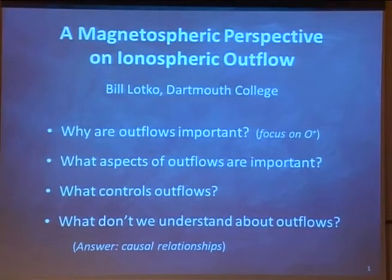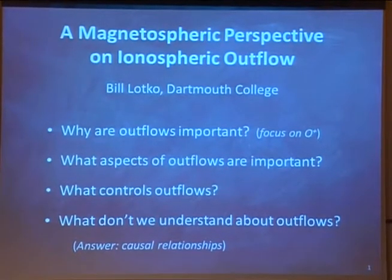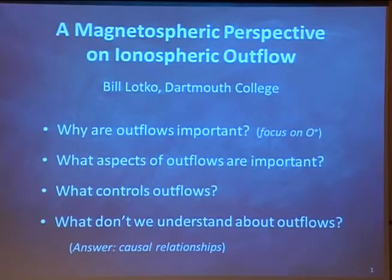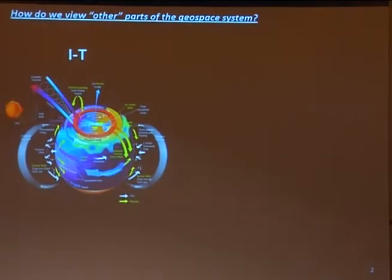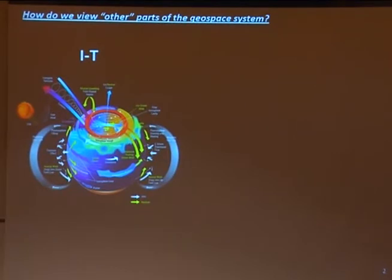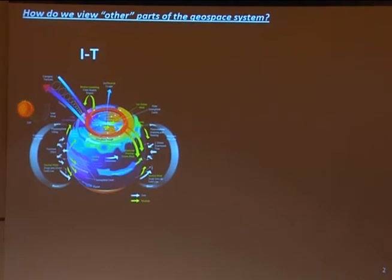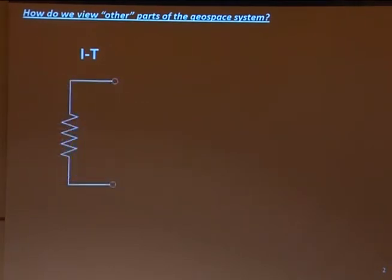For people out there who may be wondering why outflows are important in the first place, I'd just like to say a little bit about that. How do we view other parts of the geospace system? If you're from the magnetosphere, how do you view the ionosphere? We have this wonderfully complex view of the IT system, but if you ask many people in the magnetosphere what's important about this system, there's one thing: tell me what the conductance is. And so this is what the magnetosphere needs in the first order.